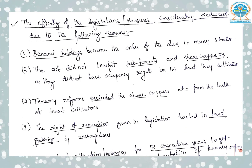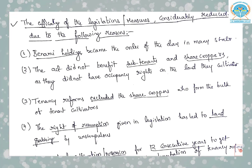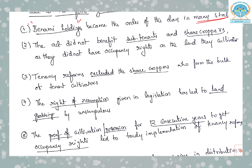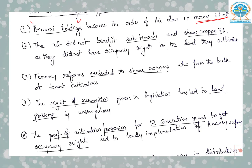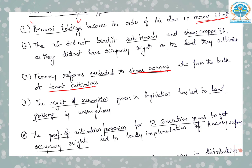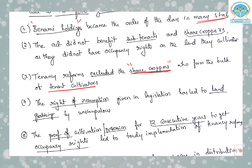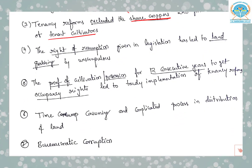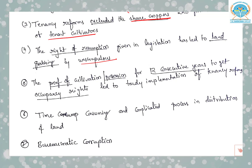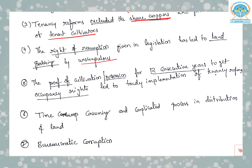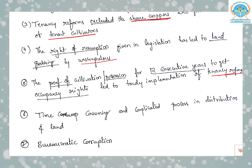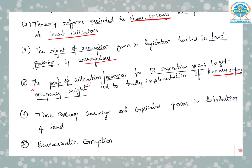Why has the efficacy of these legislations not been fruitful? One reason is that benami holdings became the order of the day in many states. The act did not benefit sub-tenants and sharecroppers as they did not have occupancy rights on the land they cultivated. Tenancy reforms excluded sharecroppers who formed the bulk of tenant cultivators. The right of resumption given in legislation led to land grabbing by unscrupulous people. The requirement of proof of cultivation for 12 consecutive years to get occupancy rights led to tardy implementation of tenancy reforms.